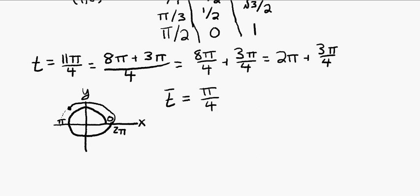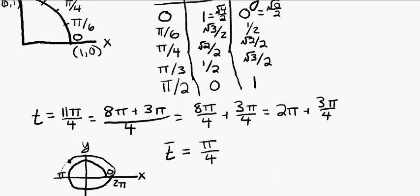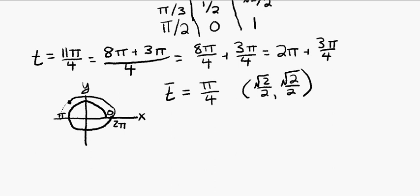Now we know from our chart that π/4 corresponds to the x,y coordinates √2/2, √2/2. We can see that this is quadrant 1, and this point is located in quadrant 2. We know that quadrant 2 is negative in the x-direction and positive in the y-direction.